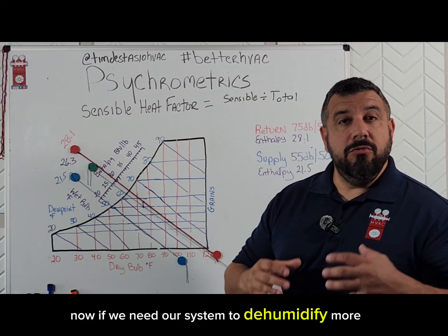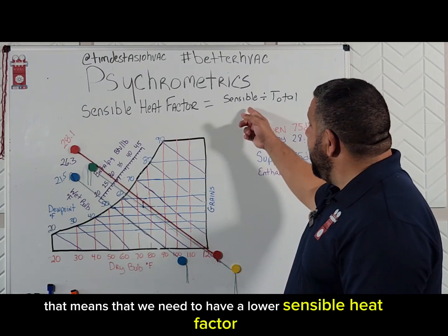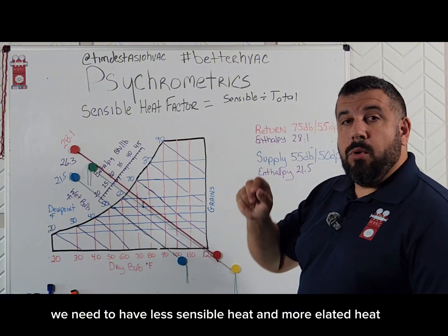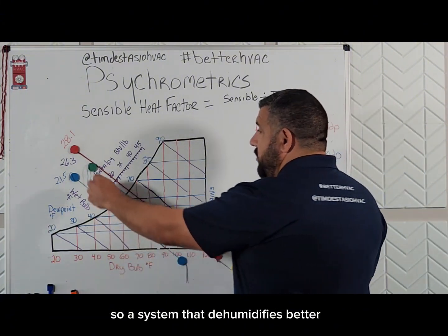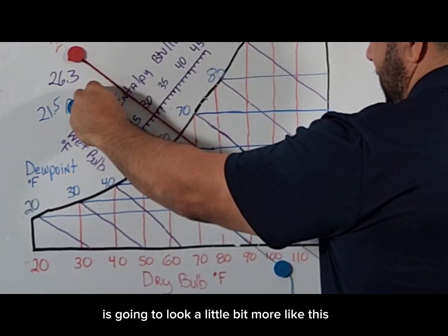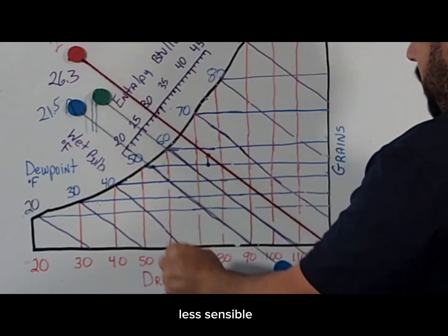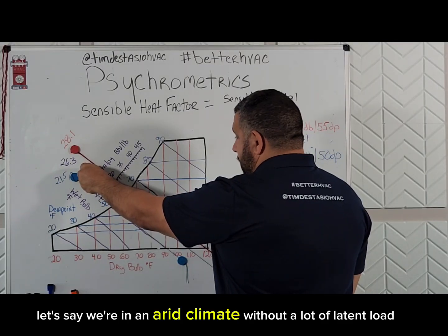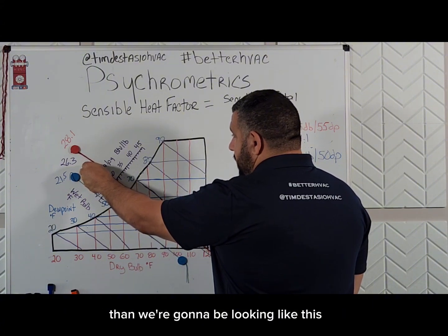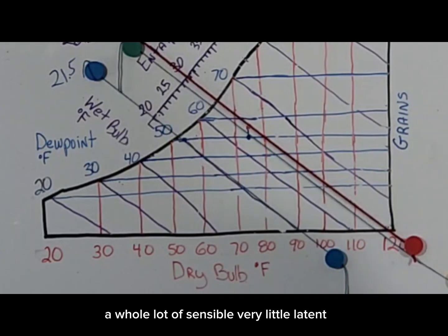If we need our system to dehumidify more, that means we need to have a lower sensible heat factor — less sensible heat and more latent heat. A system that dehumidifies better is going to have more latent removal and less sensible. In an arid climate without a lot of latent load where we need to do more temperature removal, we're going to have a whole lot of sensible and very little latent.